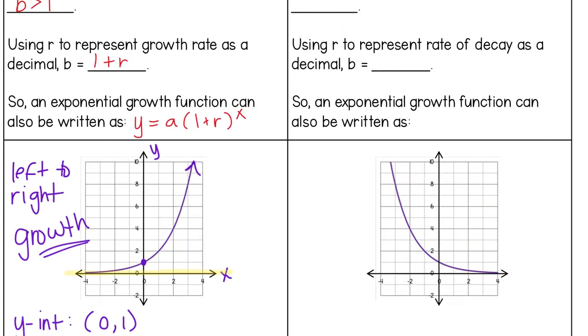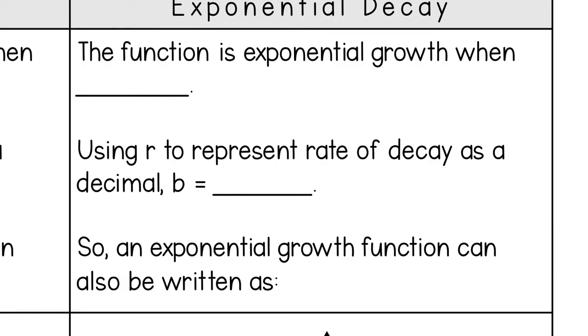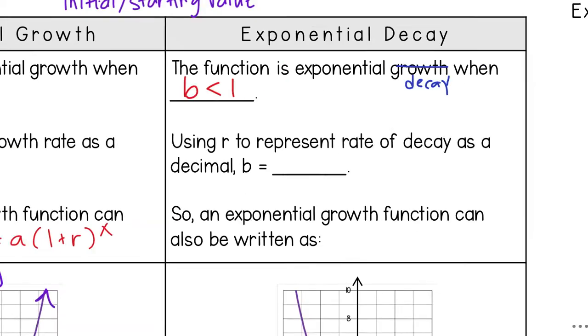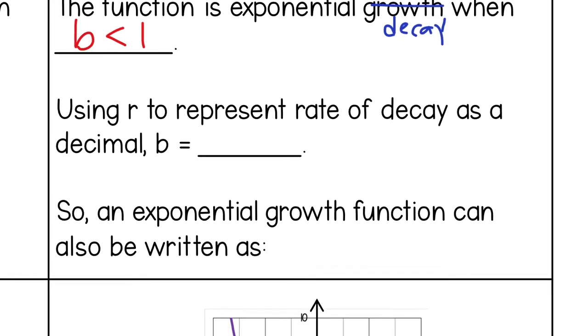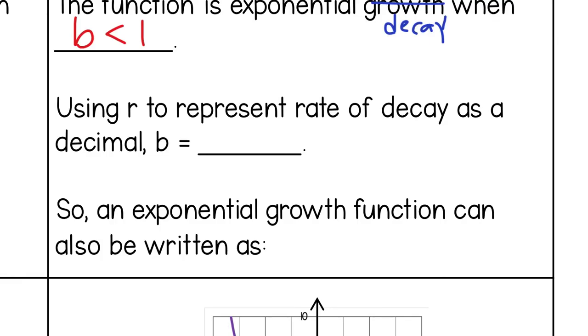So let's fill in all the information for exponential decay. The function is exponential decay when b is less than one. So pretty much the complete opposite of what growth was, right? So fractions like one-half, one-fourth, two-thirds, it can be decimal .75 as long as it's less than one. So if r was our rate of decay as a decimal, b can be written as one minus r. So the whole entire function can be rewritten as a parenthesis one minus r to the x power.